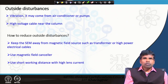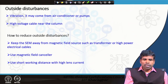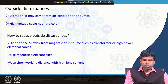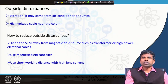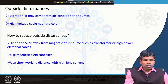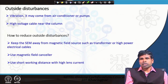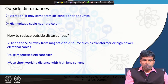External disturbances such as vibration may come from air conditioners, pumps in the microscopy room, or high-voltage cables near the column. We do not allow high-voltage electrical cables near the room. To reduce outside disturbances, keep the microscope away from magnetic field sources such as transformers and high-power electrical cables. Use a magnetic field canceler — as used in high-resolution transmission electron microscopy studies. Using a short working distance with high lens current is another approach that is under the operator's control.